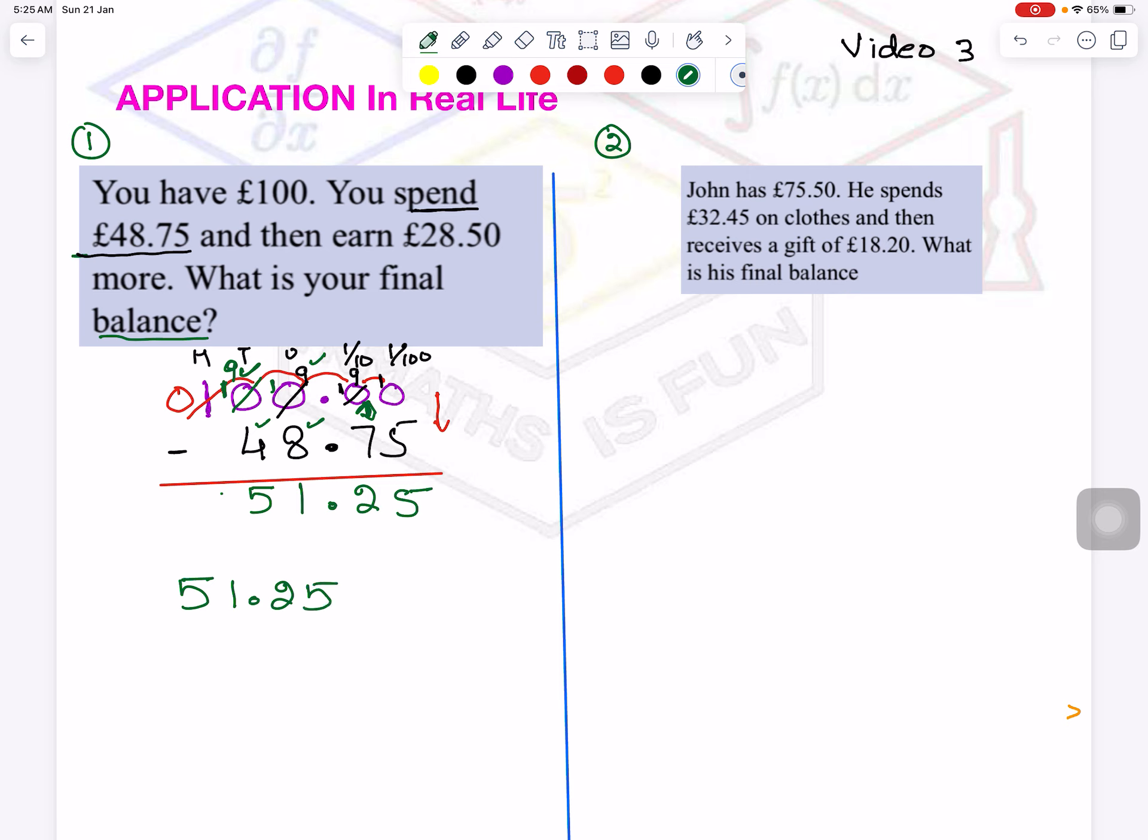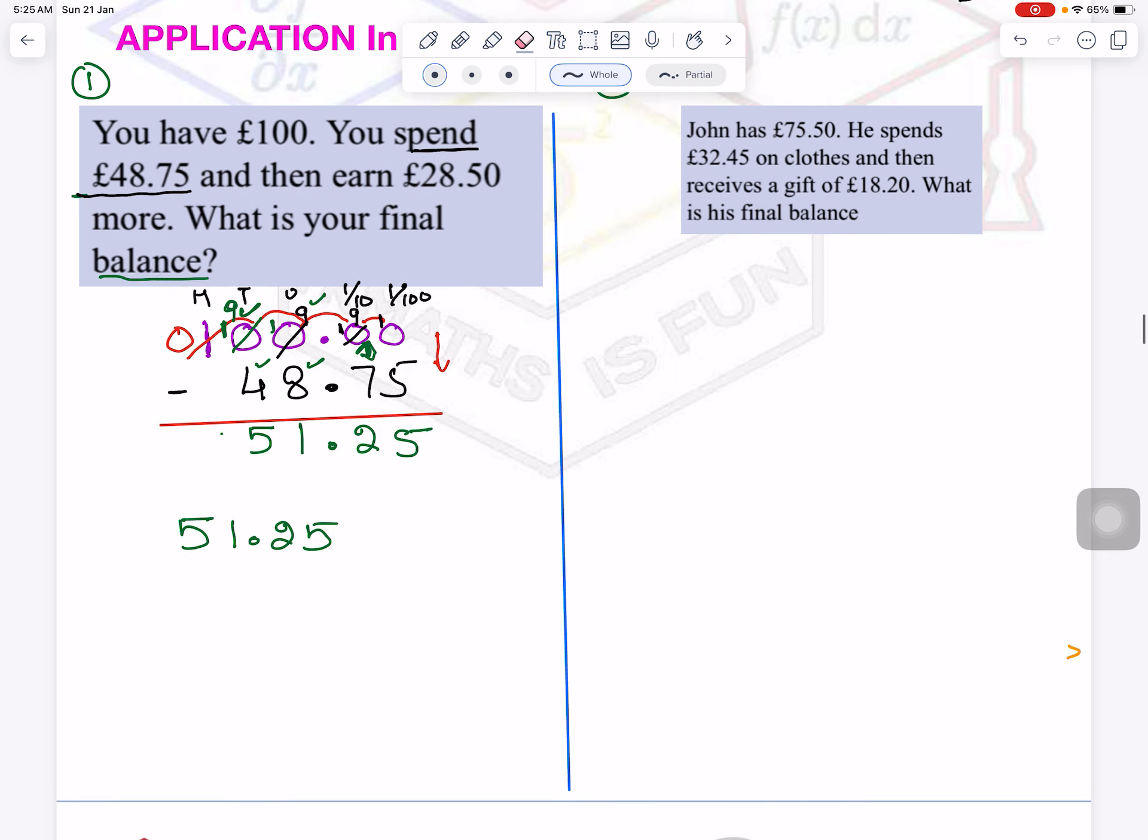So after spending £48.75, what is left with me? £51.25. When you are adding or subtracting, you do not write currency, like it is pound, or it is rupees, or whatever. You just write numbers. In the last we will write the unit.